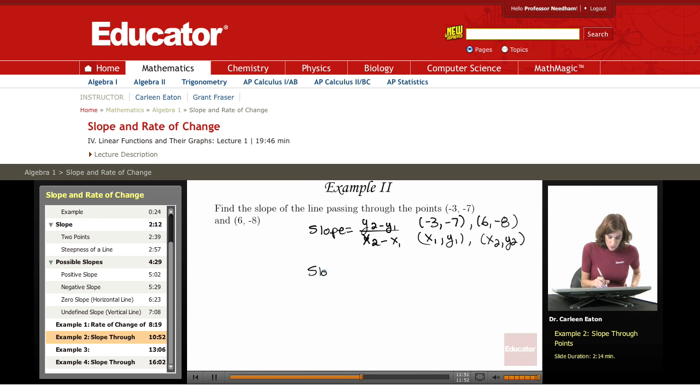So in order to find the slope, I'm going to substitute in y2, which is negative 8, minus y1, which is negative 7, over x2, so for x2 I have 6, minus x1, which is negative 3.